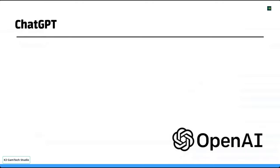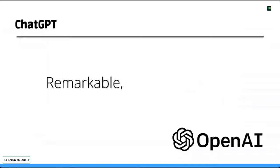It's been going viral in certain parts of the online world. People are talking about it all over the place, but just in case you haven't heard about it, we'll do a quick recap of what it is. Most of the time will be spent in ChatGPT doing things which are both interesting and sometimes a little odd. I wanted to describe ChatGPT in three words, and the three words I came up with are remarkable, scary, and essential.